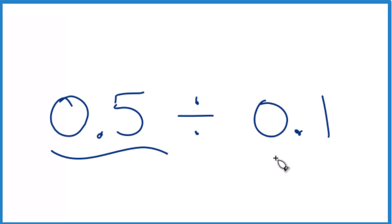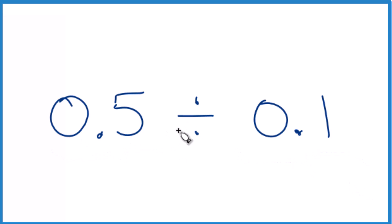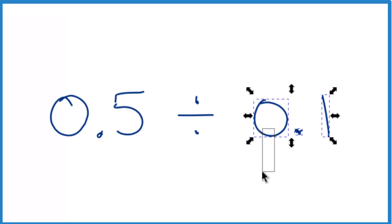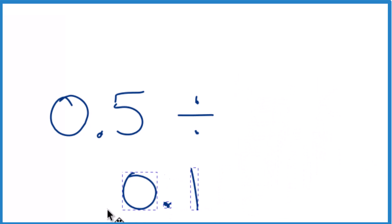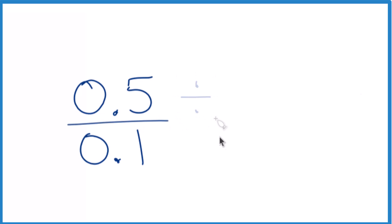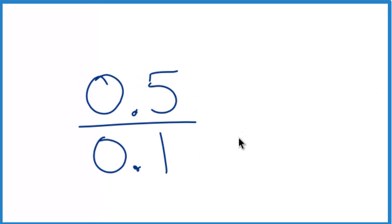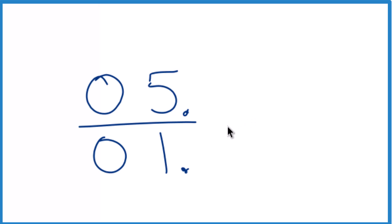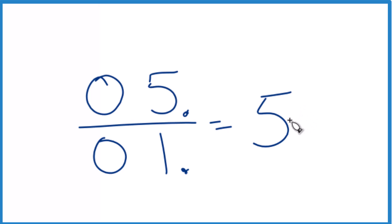Let's divide the decimal 0.5 by the decimal 0.1. So 0.5 divided by 0.1. We could think of it as 0.5 over 0.1 — that's probably a little bit easier way to think about this. If we move this decimal point over 1 here, you see it's just 5 divided by 1. And we know that 5 divided by 1 is 5. So that's one way we can figure this out — we end up with 5.